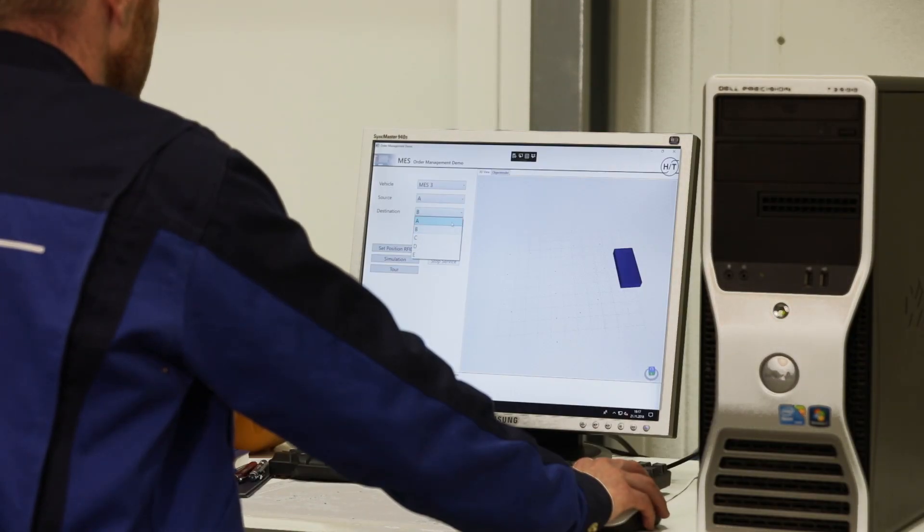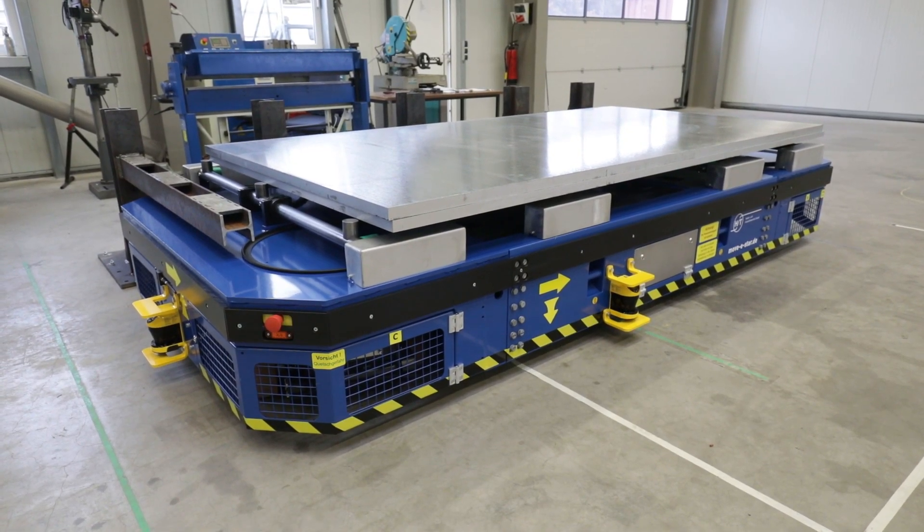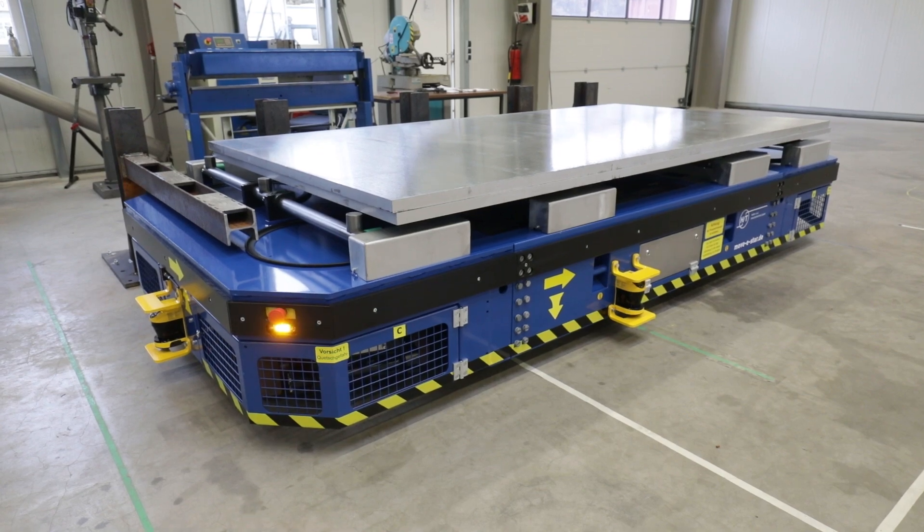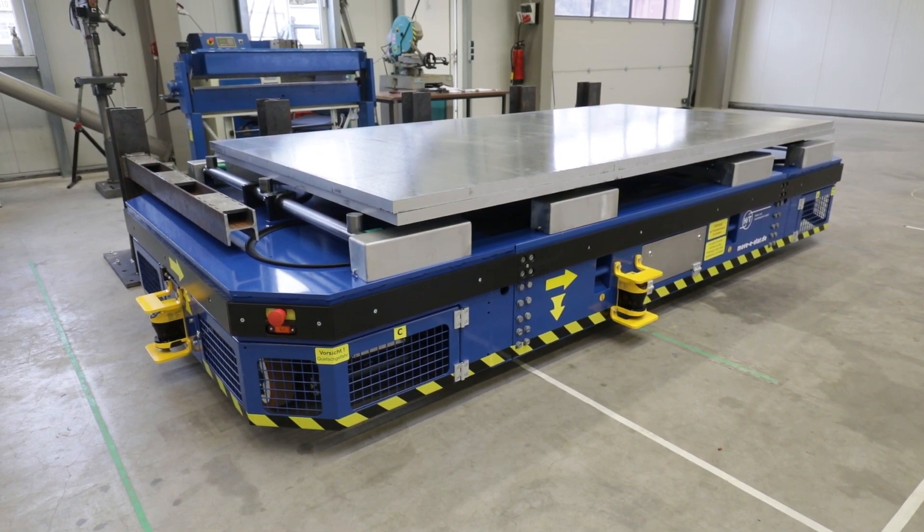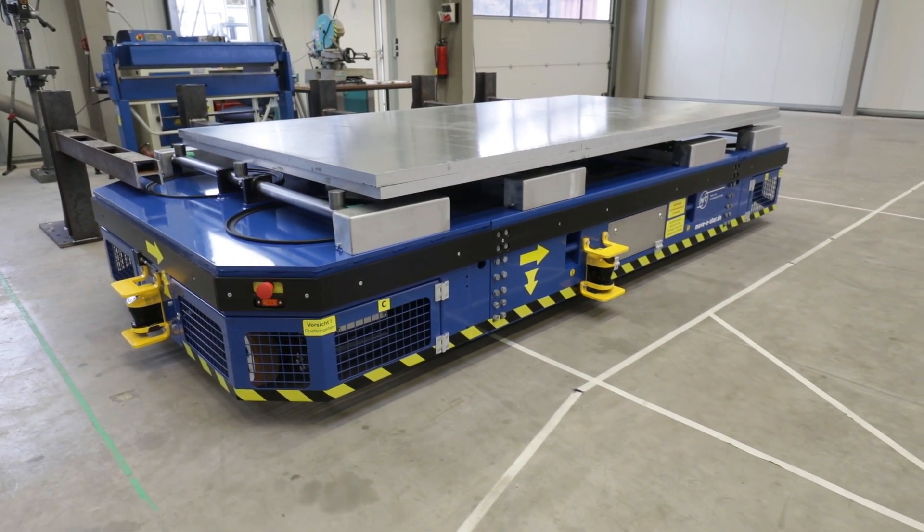The HIT control system provides and monitors the route, timing, and service of the integrated AGVs. Optionally, the control system can be connected to a higher-level ERP, Enterprise Resource Planning System.